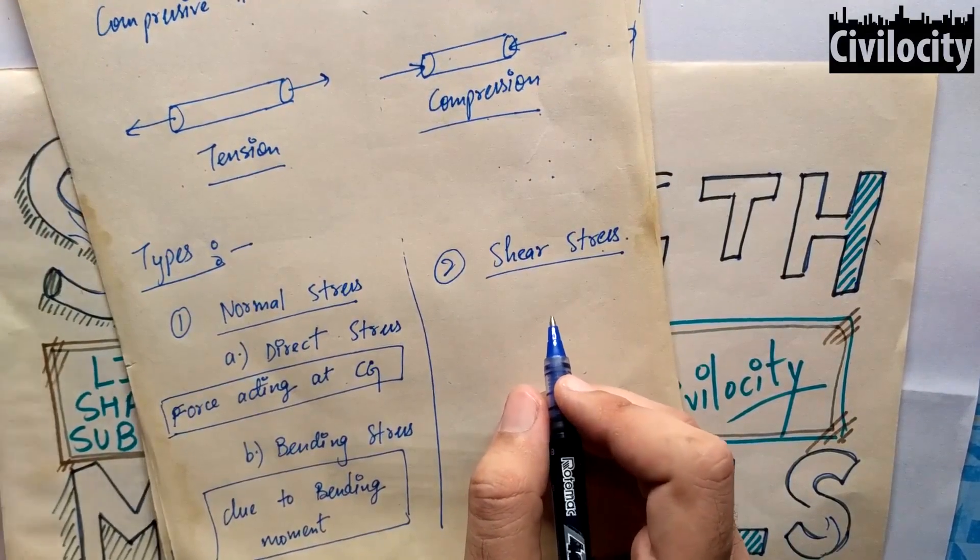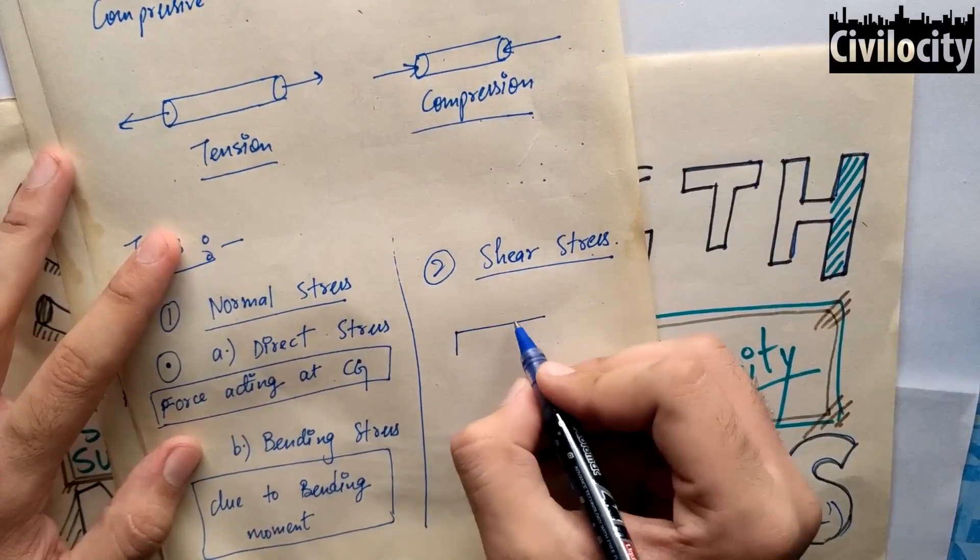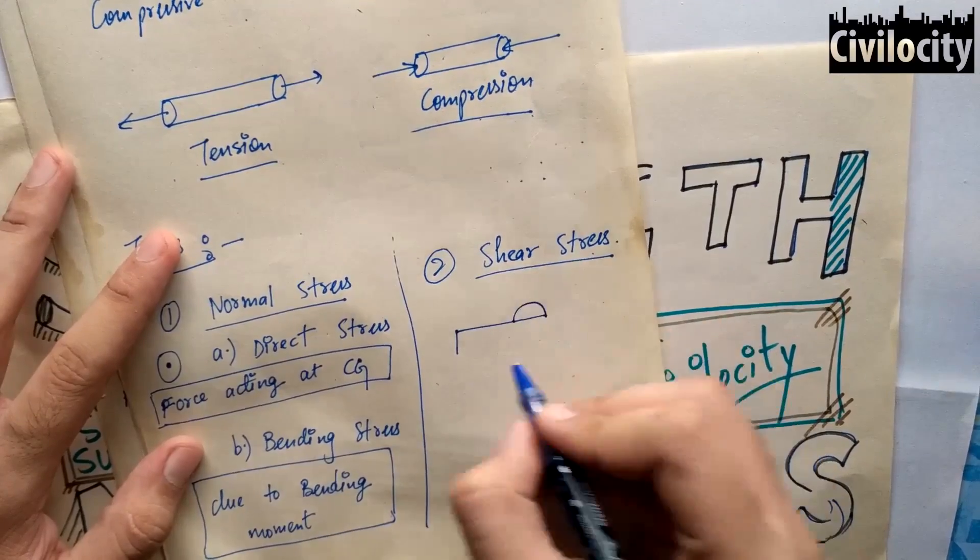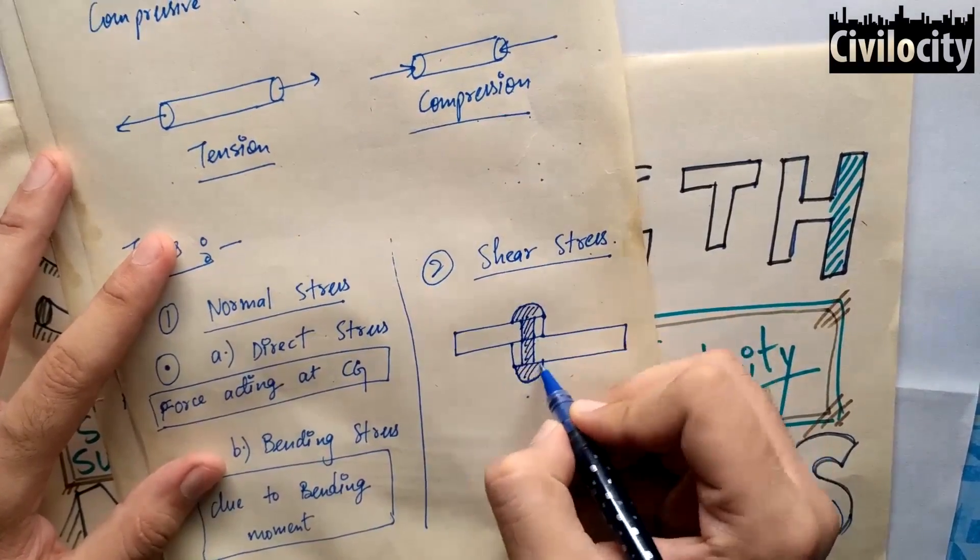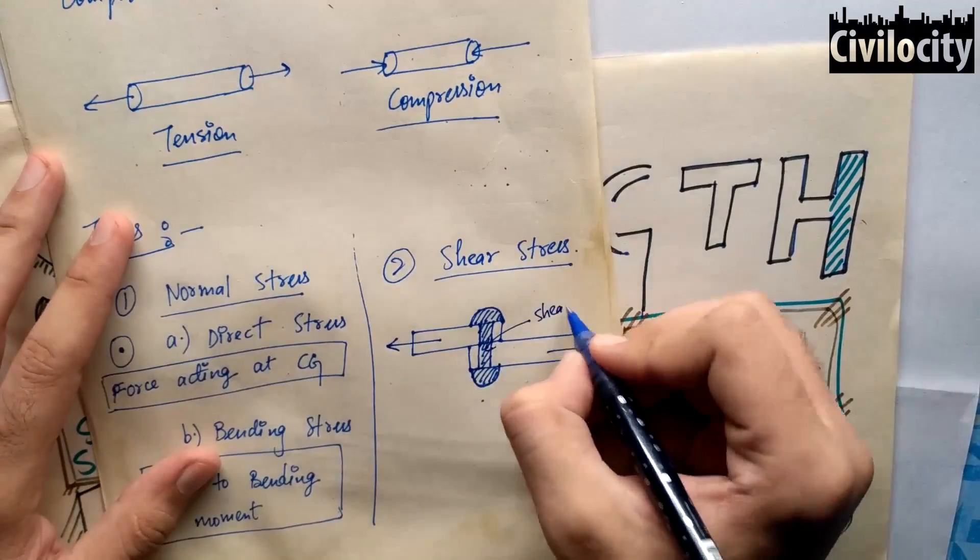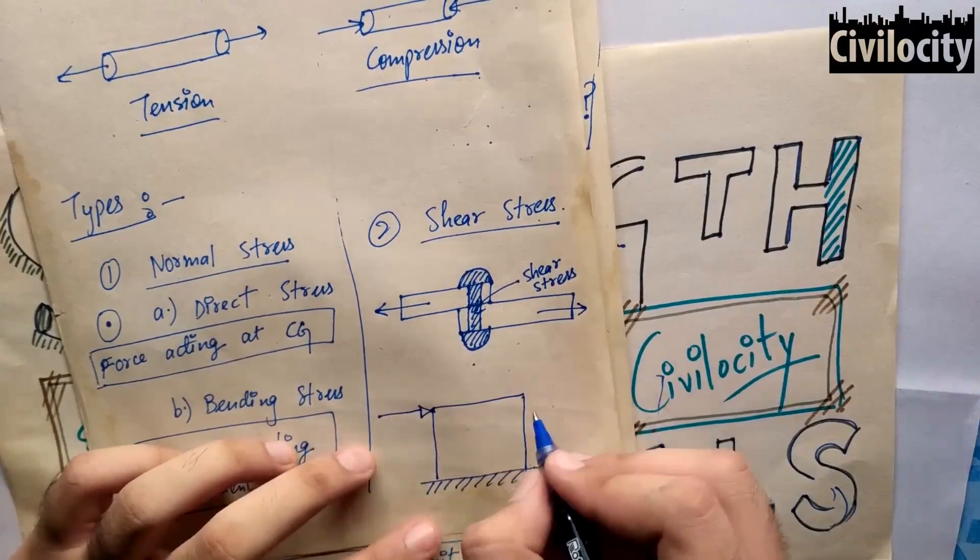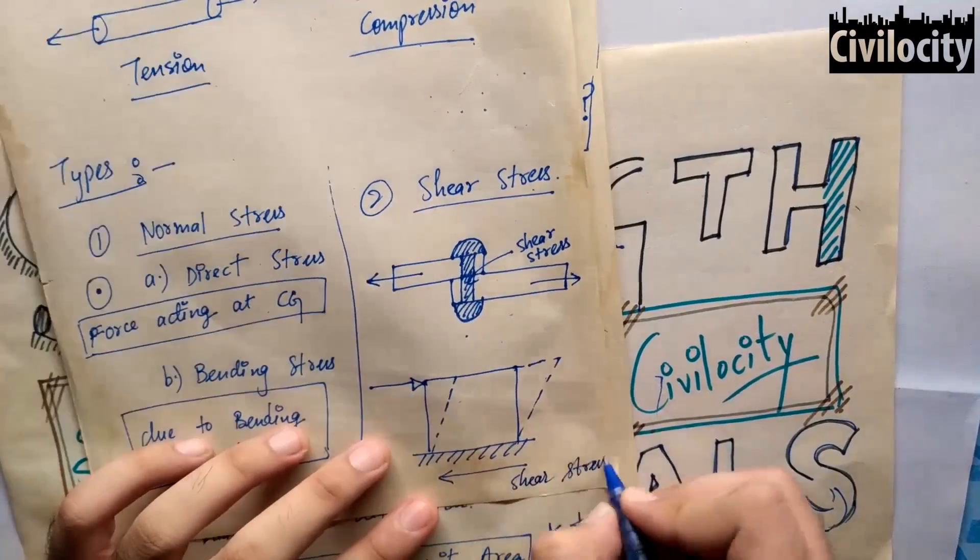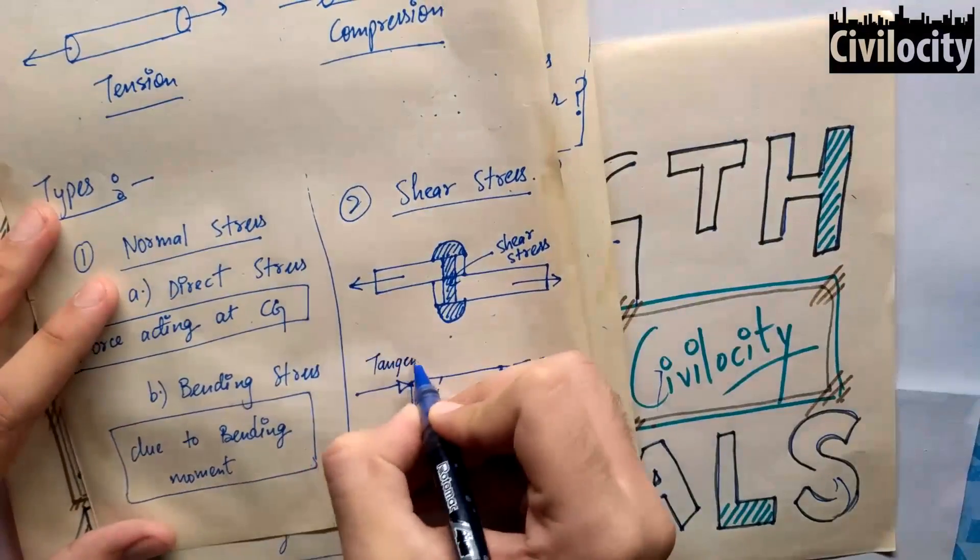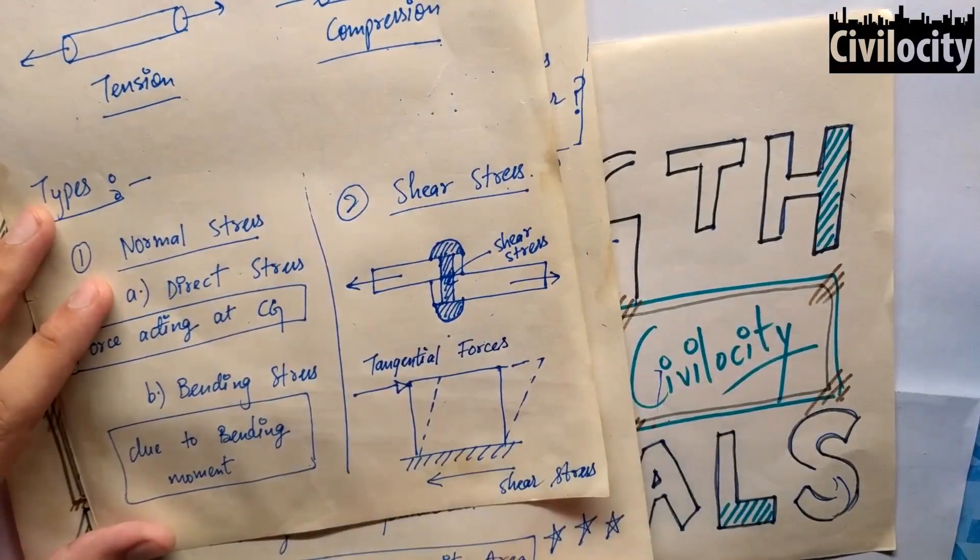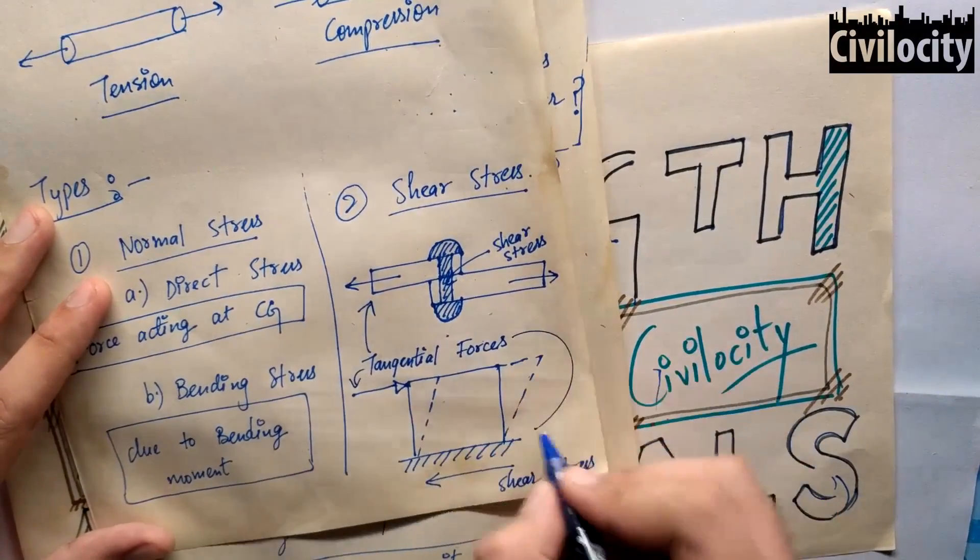Now let's talk about shear stress. The stress induced in a body when subjected to two equal and opposite forces acting tangentially, as a result of which the body tends to shear off across the section, is known as shear stress. Shear stress acts tangential to the area and is represented by this word tau, that inverted J. If you look into this figure, you can clearly see what is shear stress.